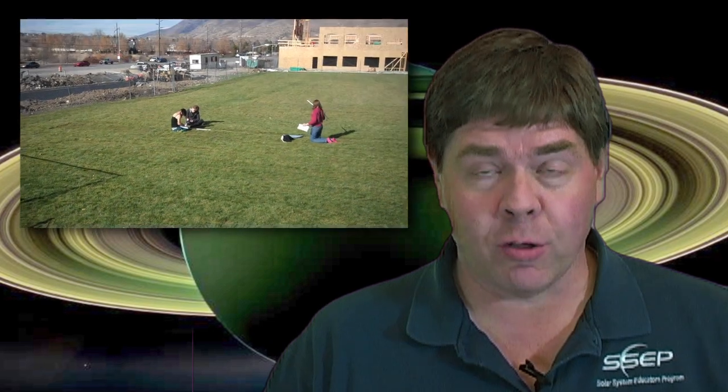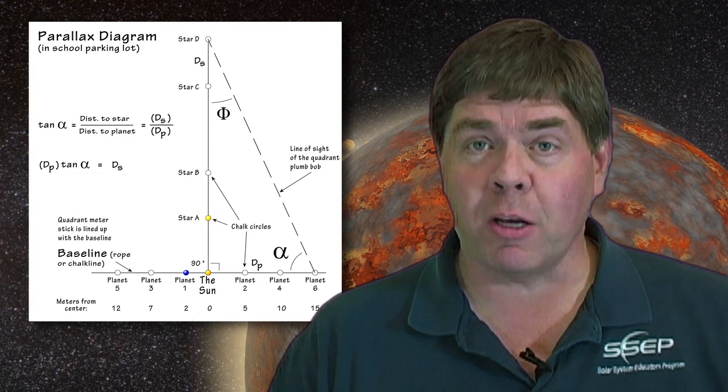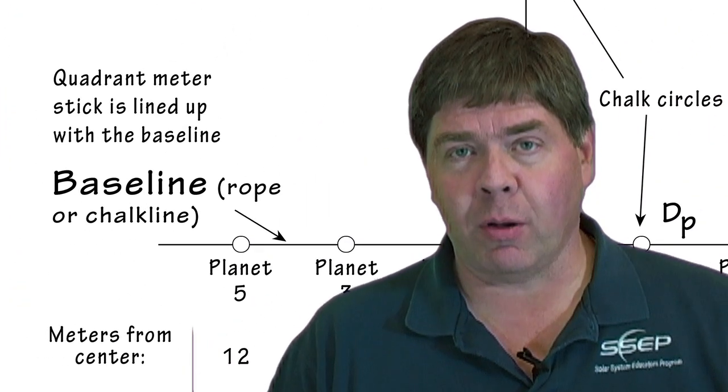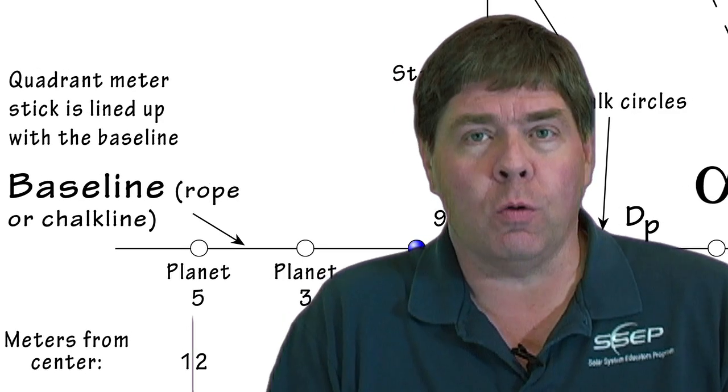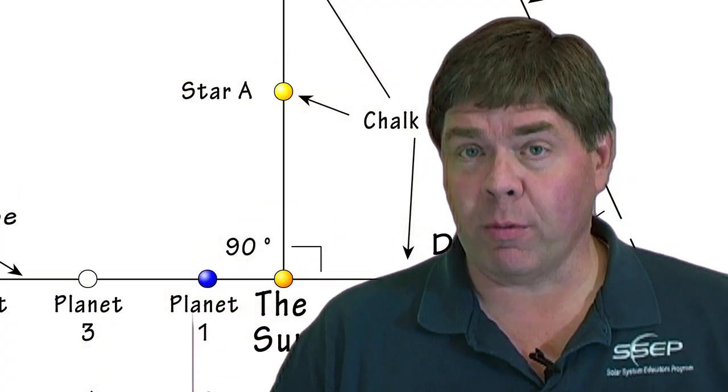The first thing you'll need to do is lay out two lengths of string or rope so that they're perpendicular to each other — use one of your quadrants to get as close to 90 degrees as possible. At the intersection of the two ropes, place our sun, which could be a cardboard cutout or a rock or other object. From the sun, lay out the planets along the baseline, making sure you measure the distance to each planet. You could, for example, lay them out at 1, 2, 5, 7, 10, and 15 meters from the central sun.